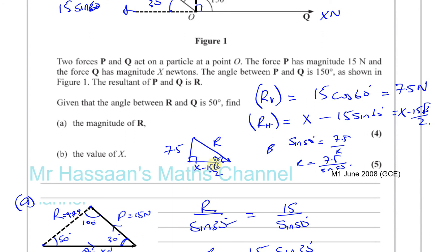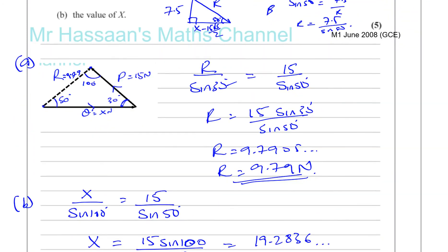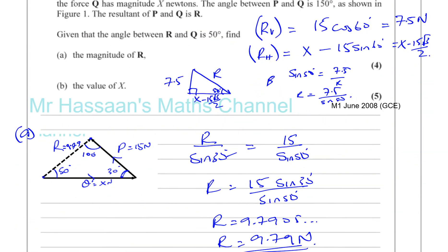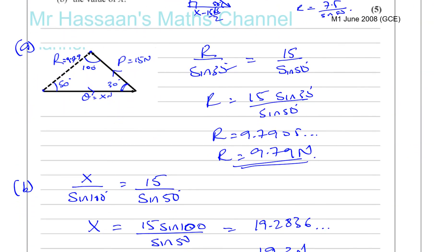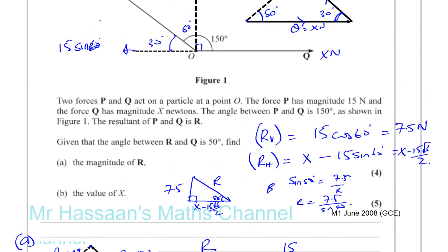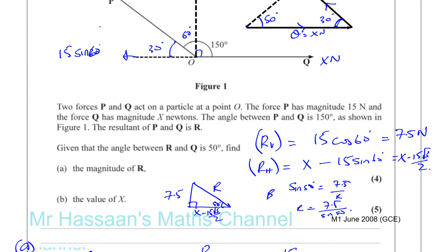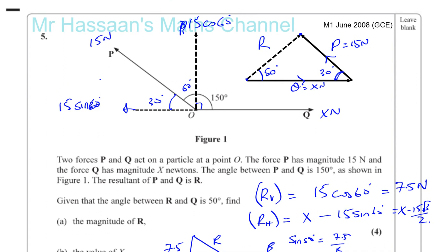Similarly, you can find X by using X minus 15 root 3 over 2 equal to the horizontal component of R, and you'll get the same answer for X. Personally, I think that the method of using the sine rule — when you have two forces and a resultant forming a triangle — is much easier. But if there are more than two forces involved, then you have no choice but to resolve all forces vertically and horizontally and use right-angle triangles to work out the resultant force. So there we have the answer to question 5 of this paper.